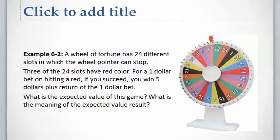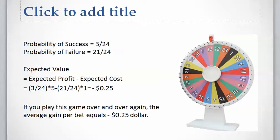Let's see what would be the expected value of this game and what is the meaning of the expected value result. The probability of success is 3 over 24, and the probability of failure is 21 over 24. Expected value equals expected value of profit minus expected value of cost, which gives minus 25 cents.